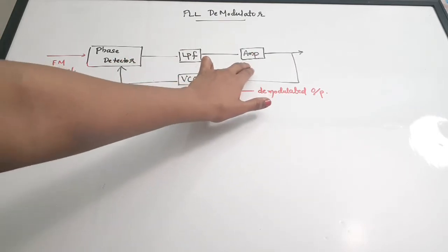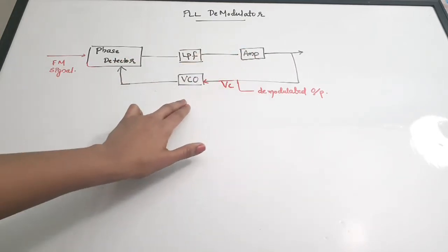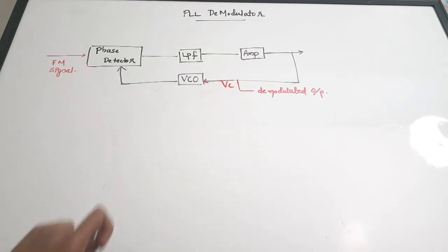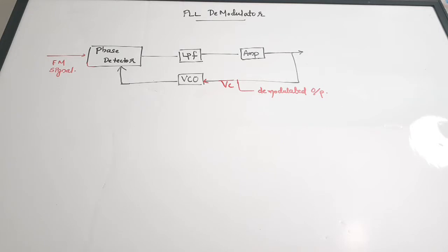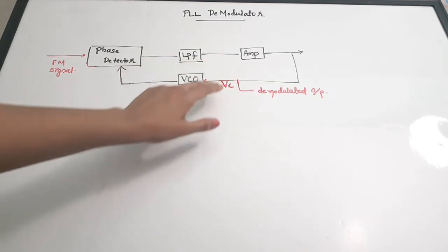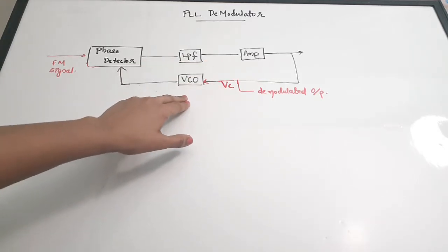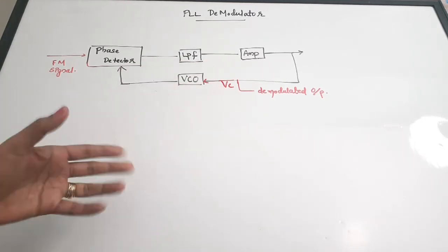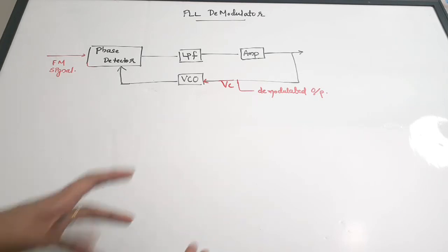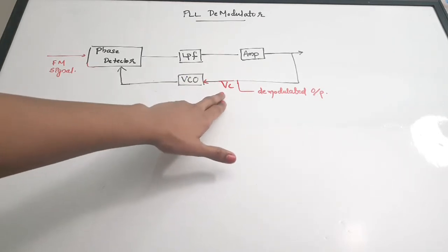The phase detector is actually a multiplier — it generates the sum and differences of the two input signals fed to it. The other important element is a VCO, which is a voltage controlled oscillator. There is a control voltage, which we take as VC.